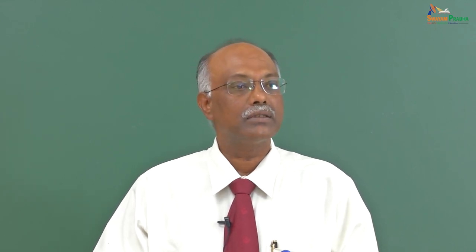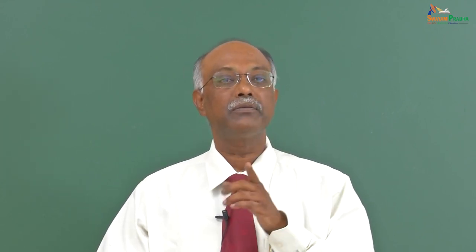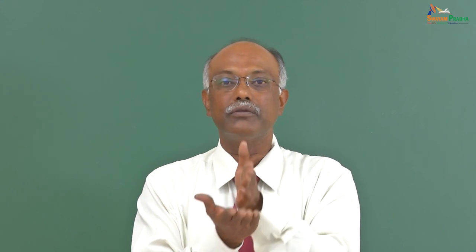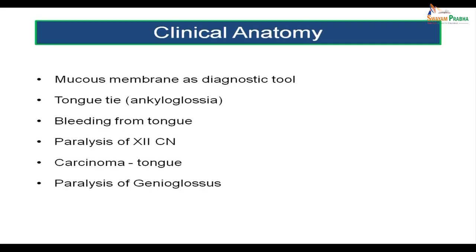We will be talking about a condition called ankyloglossia — when the frenulum of the tongue attaches the tongue to the floor of the mouth. We will discuss bleeding from the tongue, paralysis of the hypoglossal nerve, carcinoma of the tongue, and paralysis of a very important muscle called genioglossus. All these are parts of clinical anatomy which we will review at the end of this lecture. First, let us study the gross anatomy of the tongue.